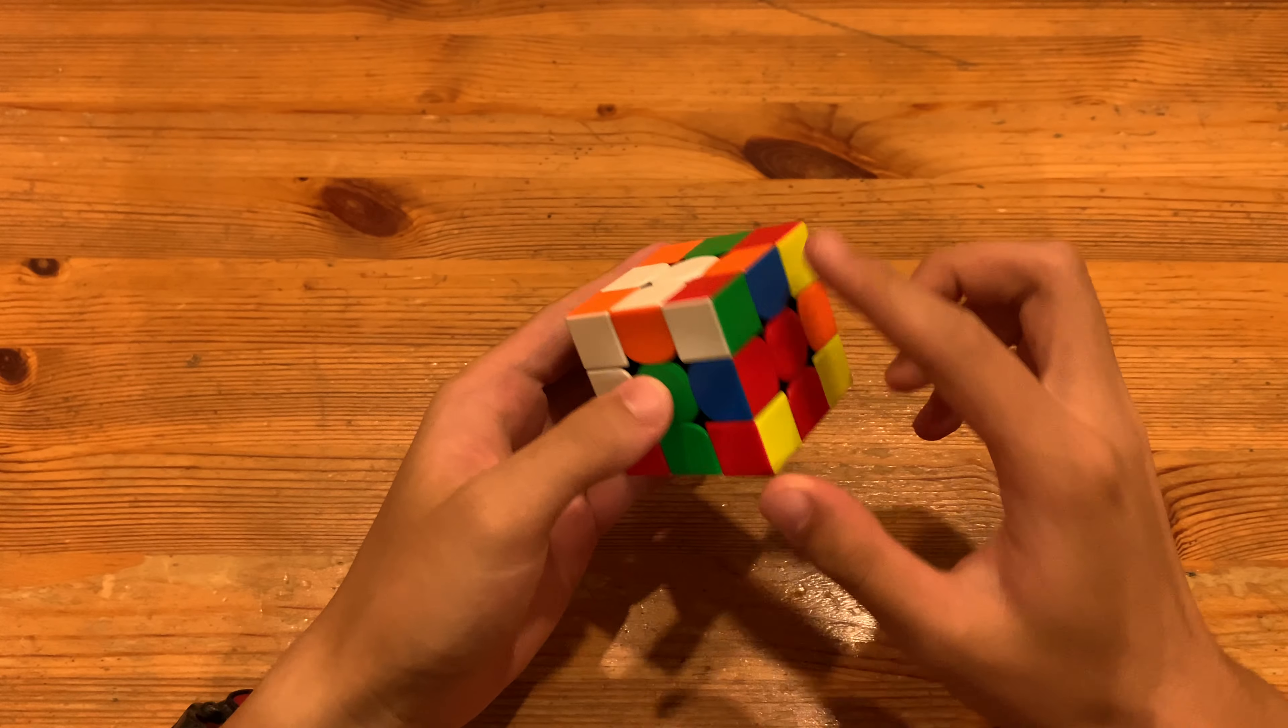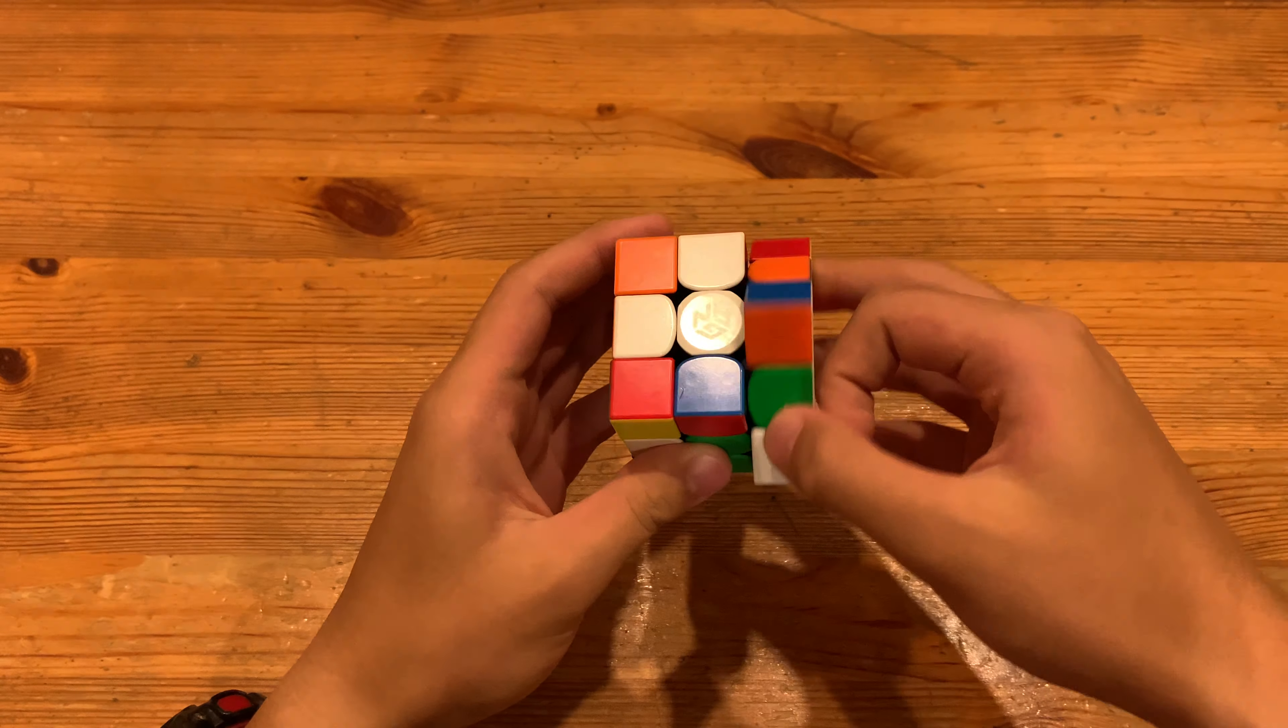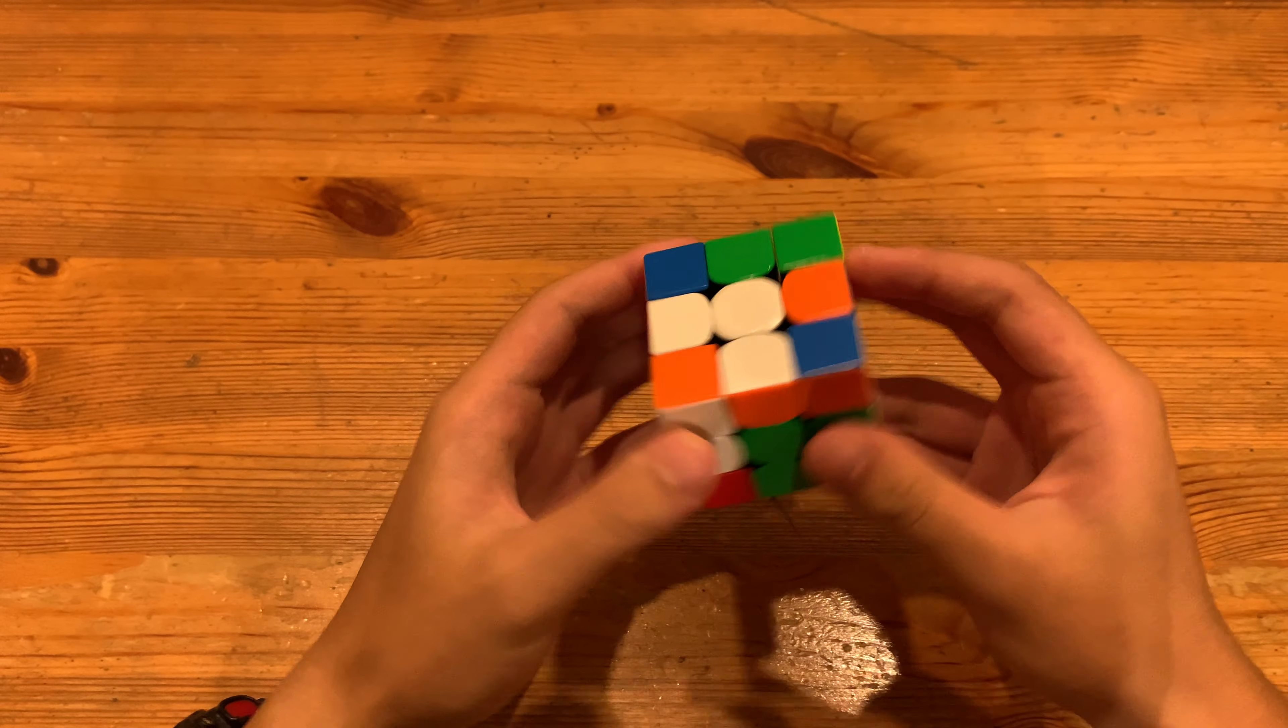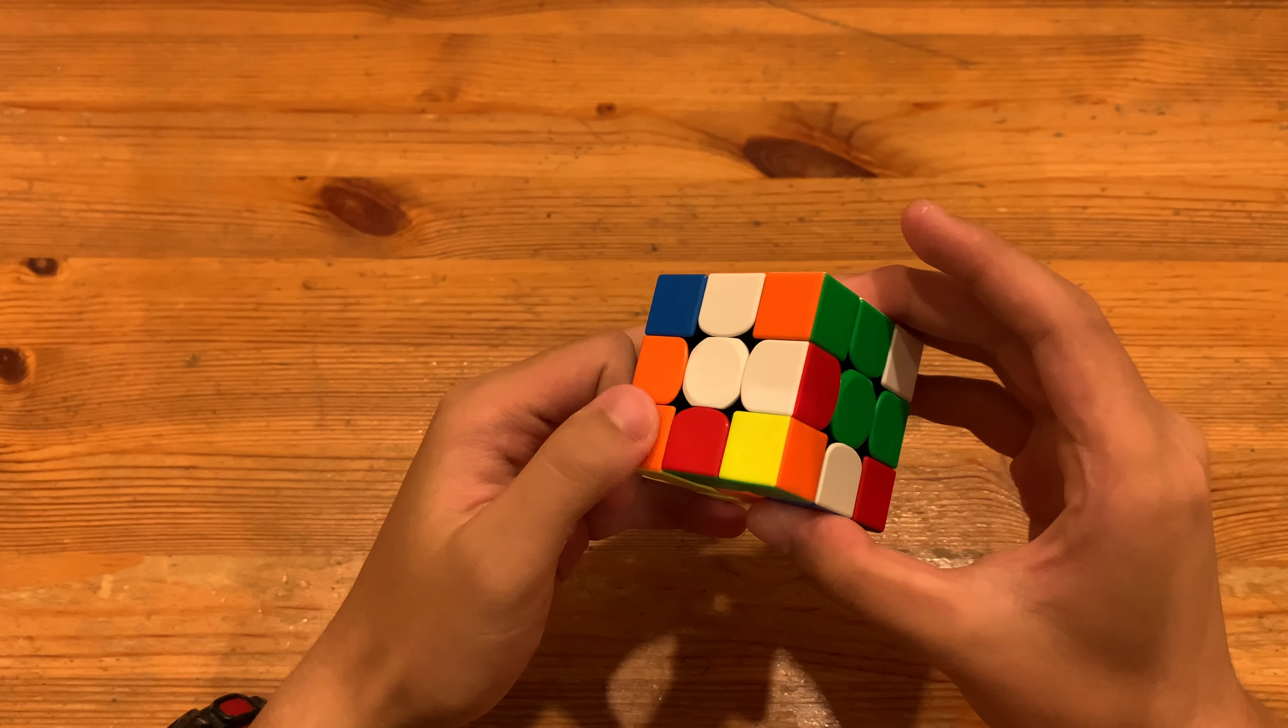And the first pair he just solved this one, so paired up with R, U, R' and then insert into the back right. Next he had this free pair over here, rotated and inserted like so.